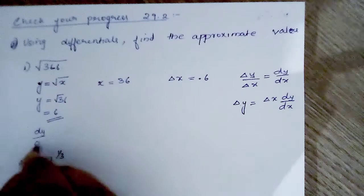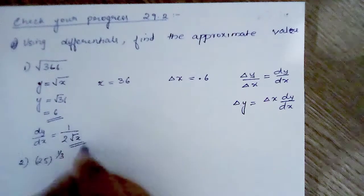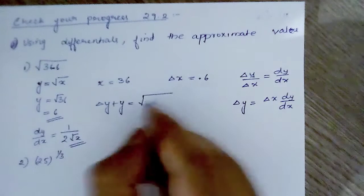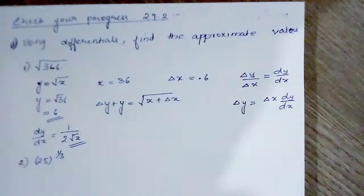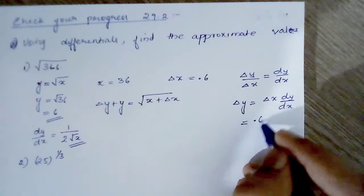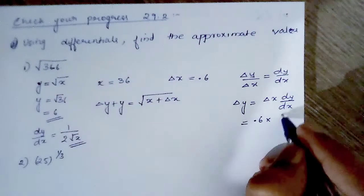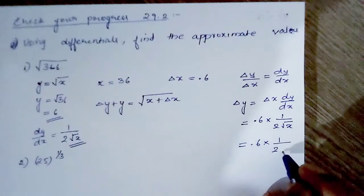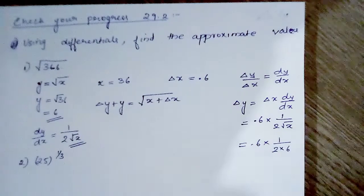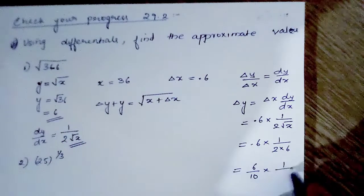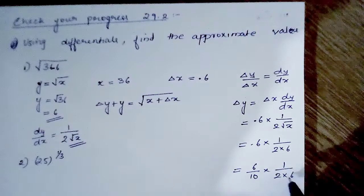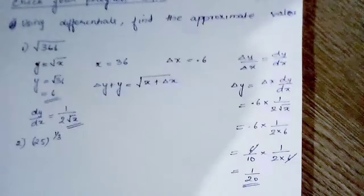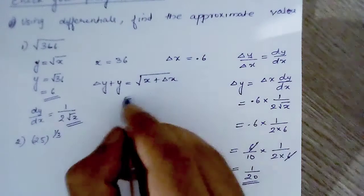dy by dx is equal to 1 by 2 root x. So delta y is equal to 0.6 into 1 by 2 root x, which equals 0.6 into 1 by 2 root 36. That is 6 by 10 into 1 by 2 into 6. The 6s cancel, giving us 1 by 20.